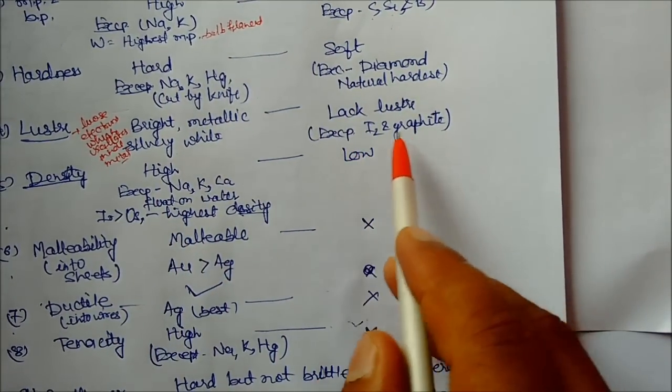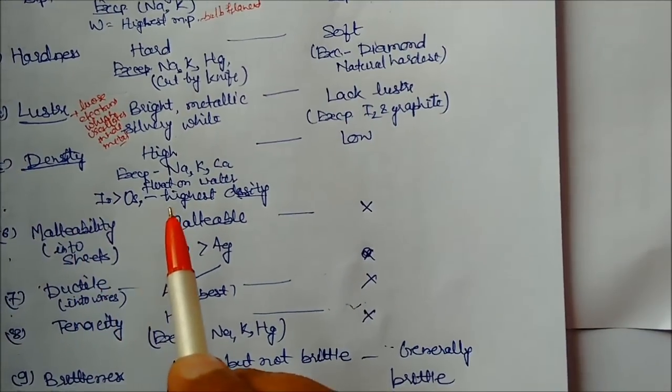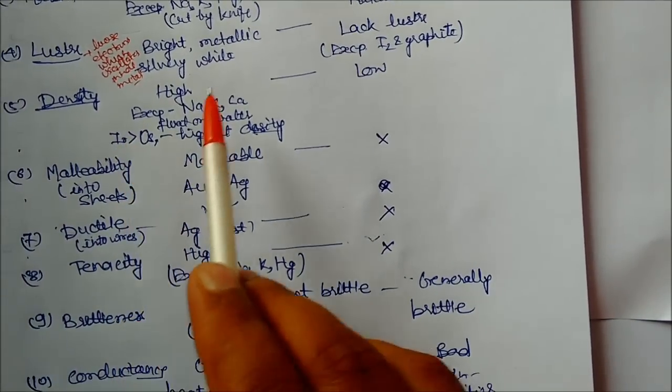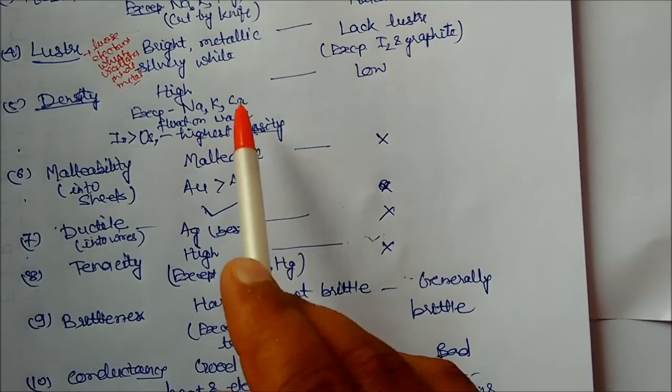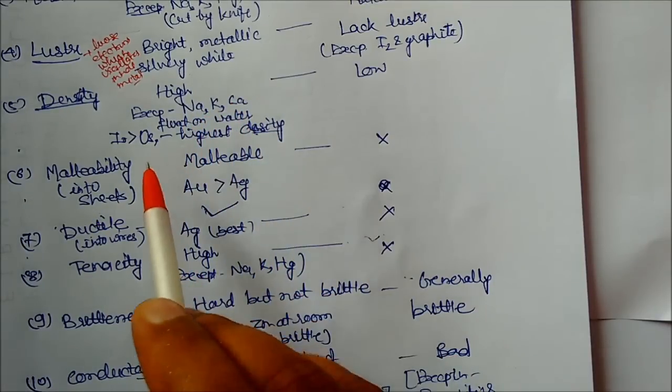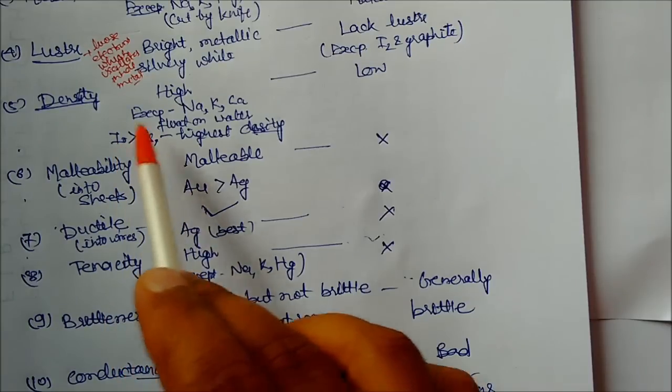Density: metals have very high density. Exceptions: sodium, potassium, calcium float on water—very light. Highest density is iridium followed by osmium, the highest density in the periodic table among metals.